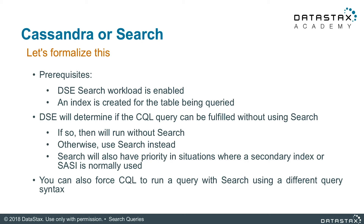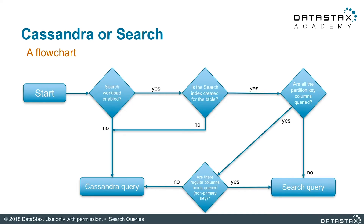Search will also have priority in situations where a secondary index is normally used. Be aware, you can also force CQL to run a query with search using a different query syntax that will be discussed in the term search unit. This flowchart helps us walk through the logic of DSC Core versus a DSC Search query, and which one to choose.